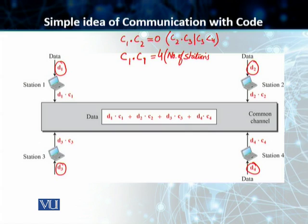So with these two properties in mind, we have four stations and a common channel. Station one will multiply—this is a special form of multiplication—it multiplies its data by its code to get D1·C1, and this is what we transmit on the channel. Similarly, station D2 will send D2·C2 on the channel, station D3 will send D3·C3, and station D4 will send D4·C4. So the total amount of data on the channel is D1·C1 plus D2·C2 plus D3·C3 plus D4·C4.